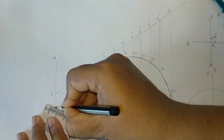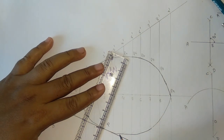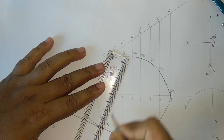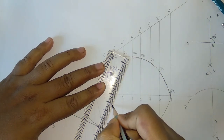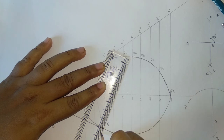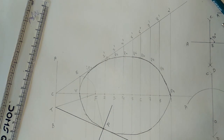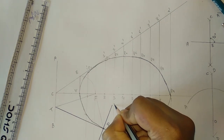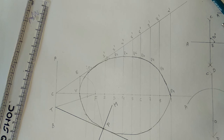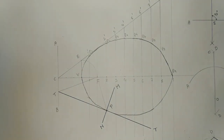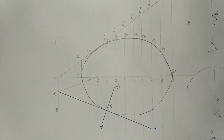This is my tangent, and perpendicular to the tangent is the normal. So TT is the tangent, and NM is the normal which is perpendicular to the tangent. I think you have understood the process. Thank you.